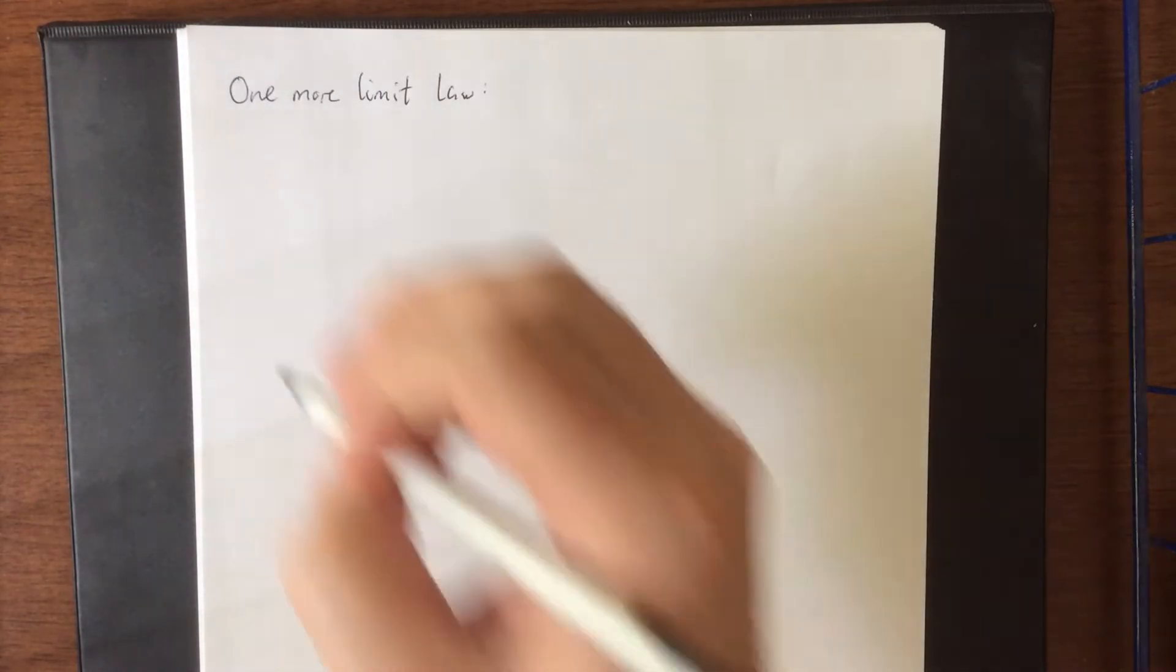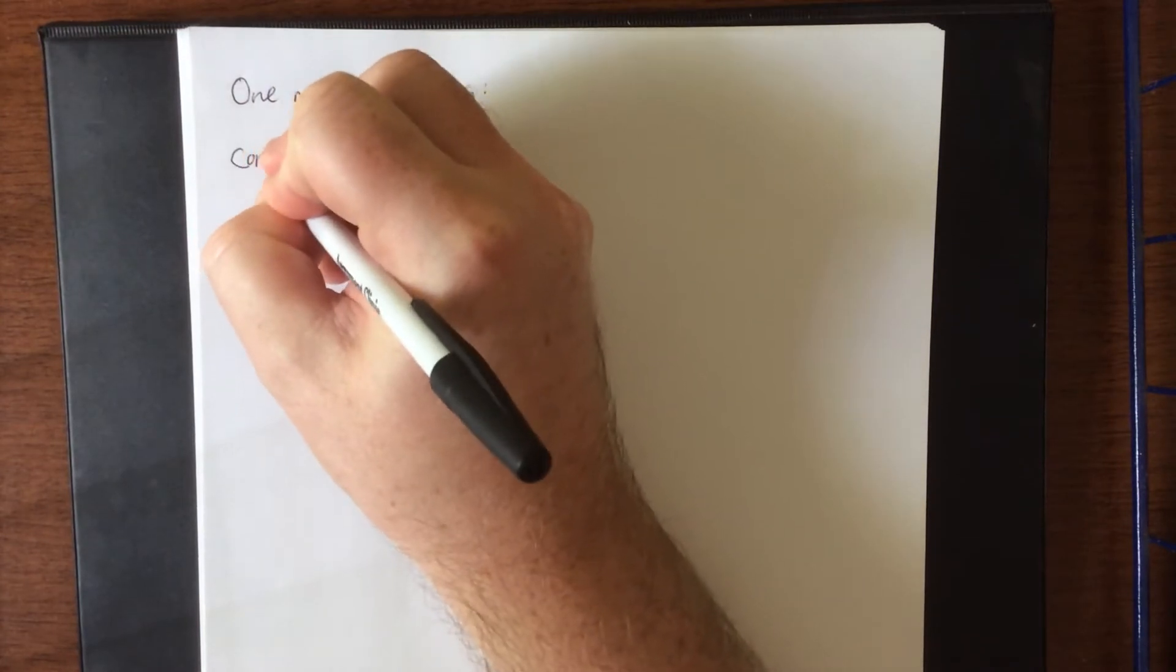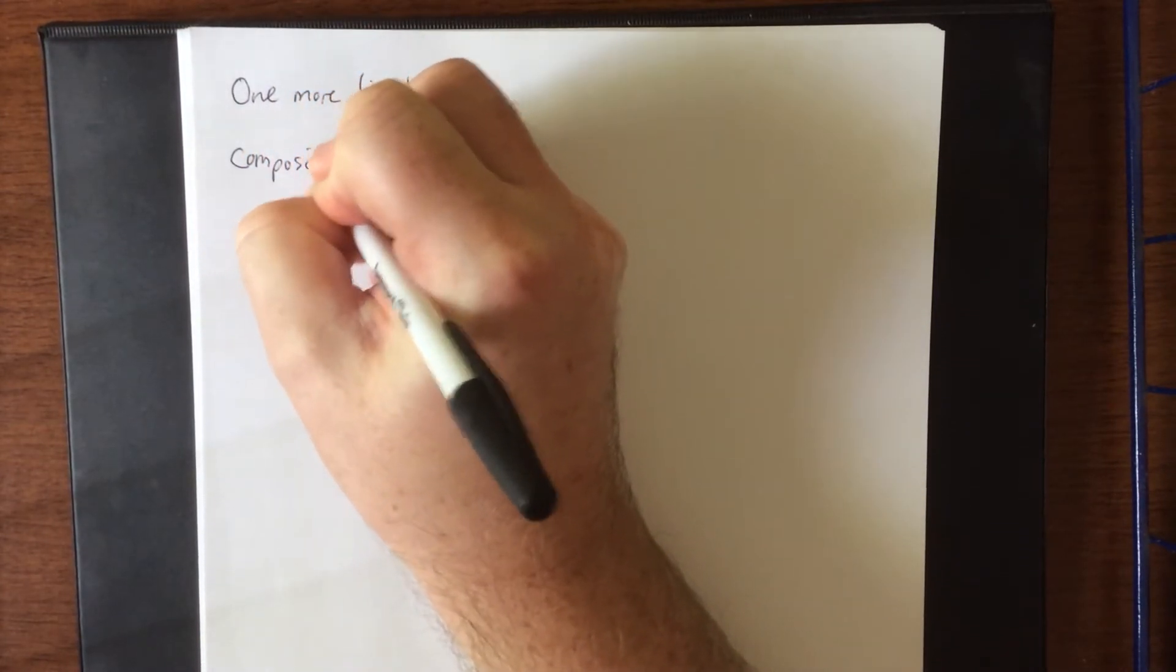Now that we have our concept of continuity in place, we can introduce one additional limit law. If you'll kindly recall, we have limit laws for sums, differences, constant multiples, products, quotients, all sorts of things. We're going to introduce one more, and it's for a composition.